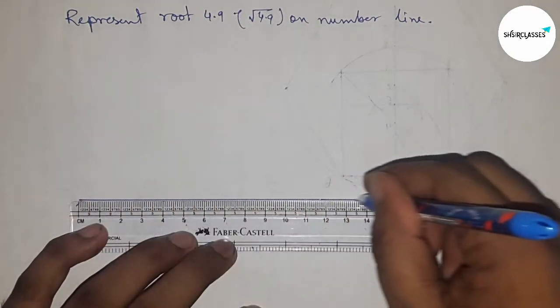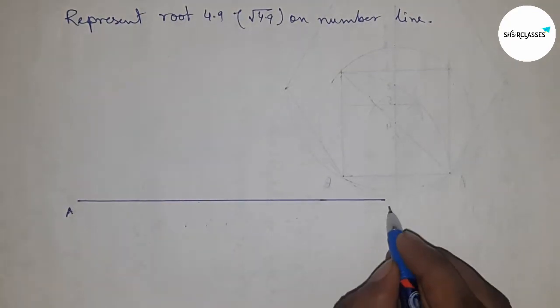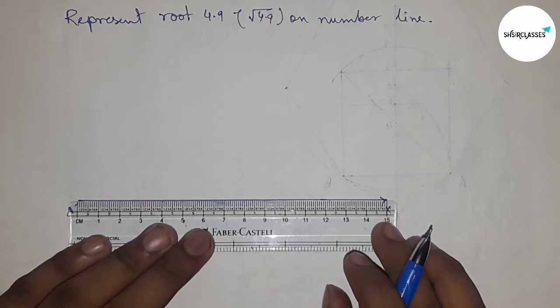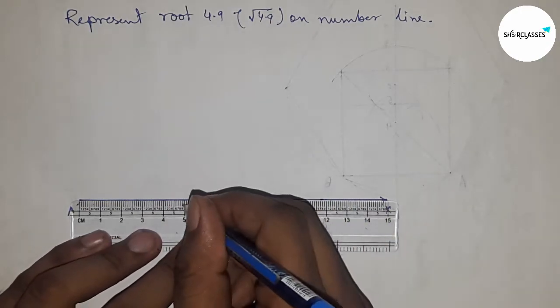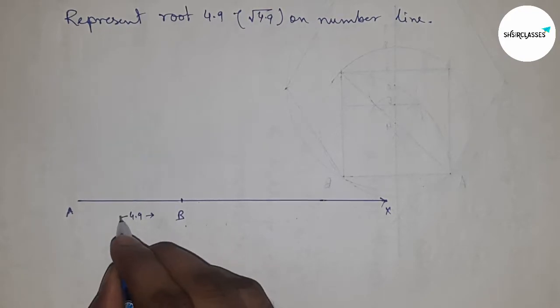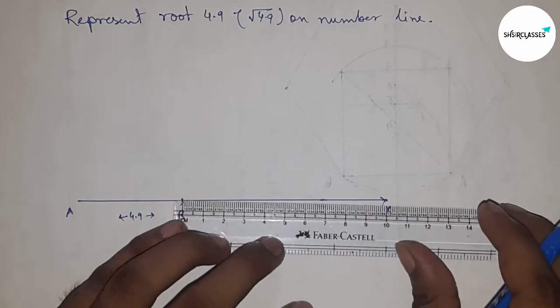First of all, drawing a line of any length here, and this is the AX line. Next, taking a length of 4.9 centimeters, and this is point B. So this is 4.9 centimeters.